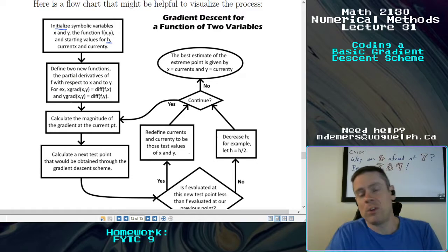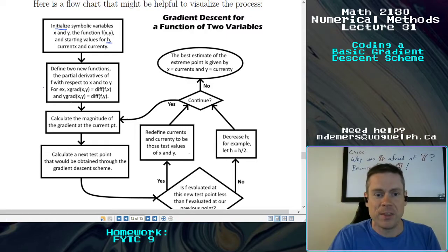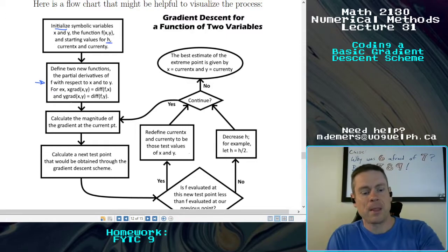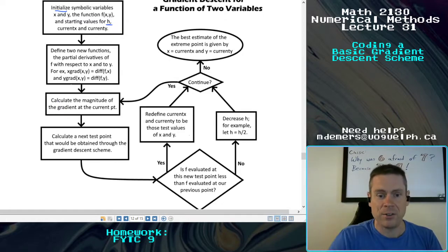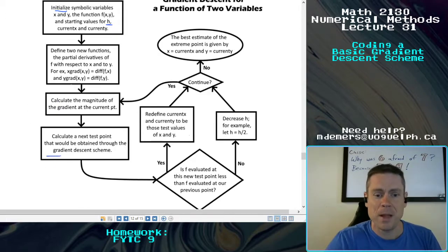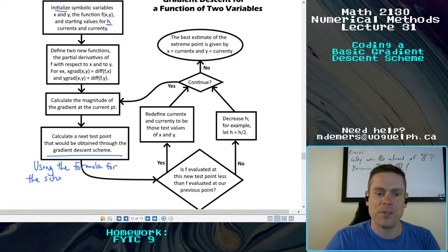Once you've got the functions, we'll need to find partial derivatives so we can construct that gradient. That's what this step is all about. And then you're going to need to put together that schema. That means calculating the magnitude of the gradient, which we'll need to divide that gradient vector by, and then calculate that next test point that would be obtained through the gradient descent scheme using the formula for the scheme, which is going to involve that gradient, which is going to involve that magnitude of the gradient.